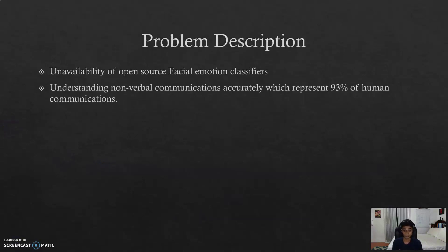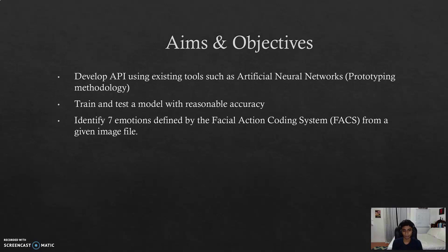The problem we faced in our literature review was the unavailability of similar open source emotion classifiers, and we found out that 93% of human communication includes non-verbal communication. When you think about it, this is actually a huge chunk of information that we attribute to non-verbal communication like facial cues or gestures. So the aim of our research was to develop an API using existing tools such as the artificial neural network to train and test the model with reasonable accuracy to identify the seven emotions by the FACS system.